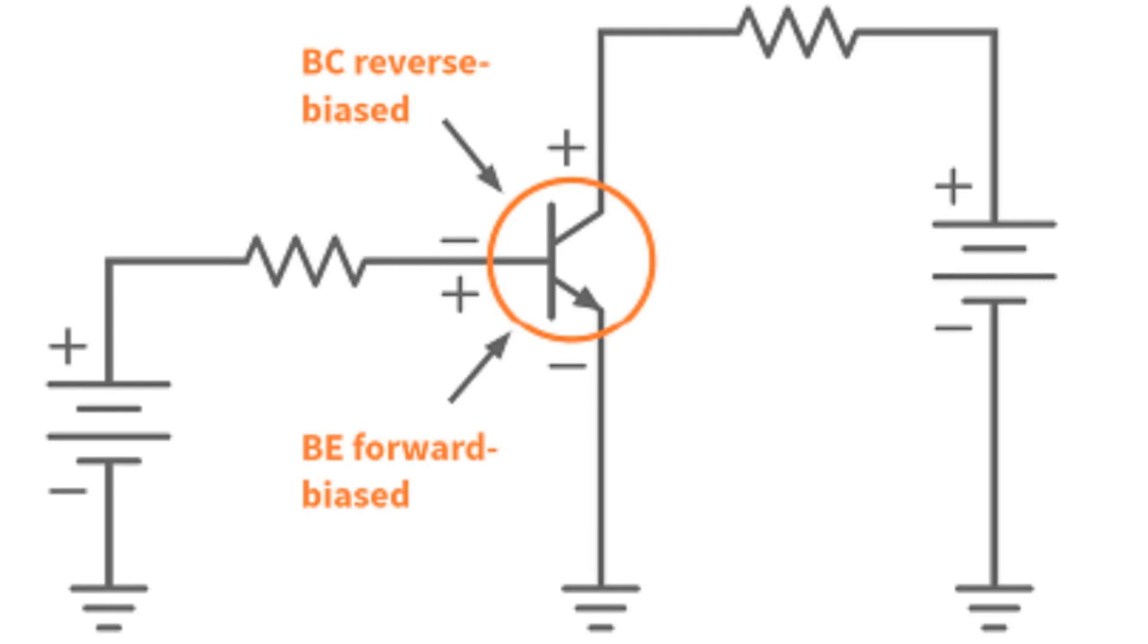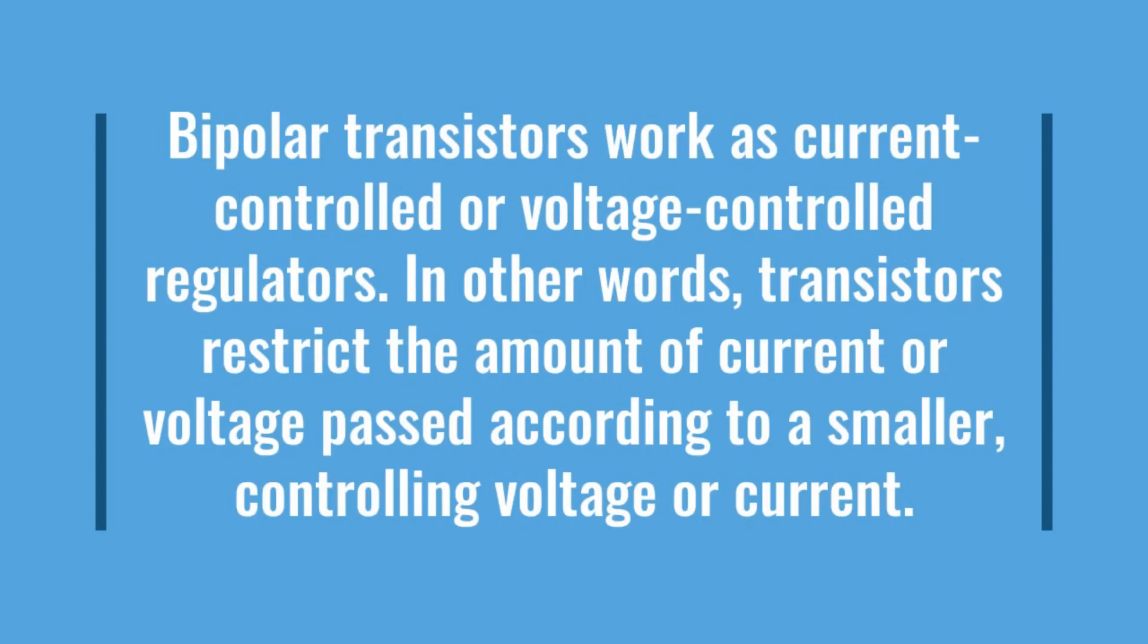Bipolar transistors work as current controlled or voltage controlled regulators. In other words, transistors restrict the amount of current or voltage passed according to a smaller controlling voltage or current.